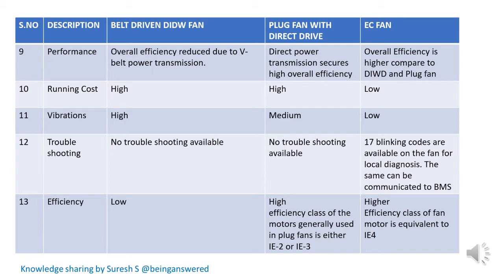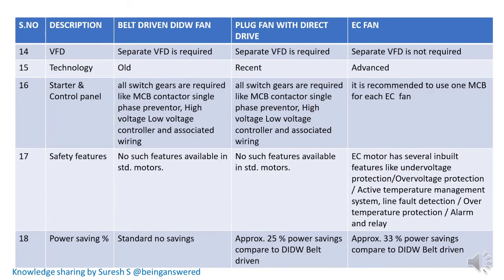For efficiency, belt driven fan will be low, plug fan will be high, and EC fan will be higher. In the plug fan, they use motors of IE2 or IE3, whereas in EC fan the efficiency of the fan motor is equivalent to IE4. For controlling the speed of the motor, a VFD is required as a separate device for plug fan and belt driven DIDW fan, but EC fan will have an inbuilt VFD, so no separate VFD is required.